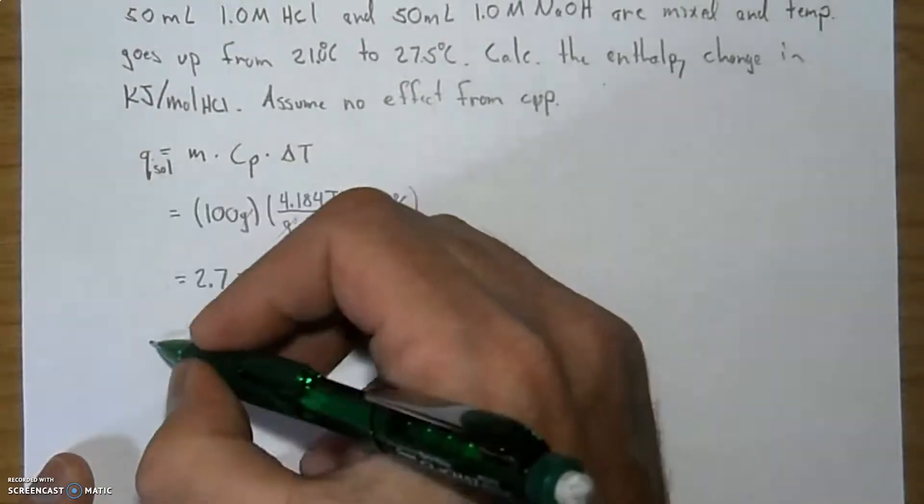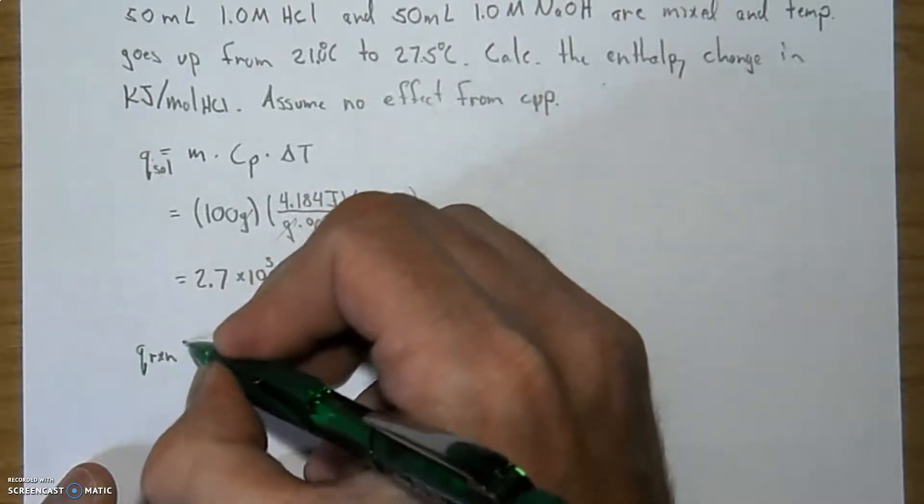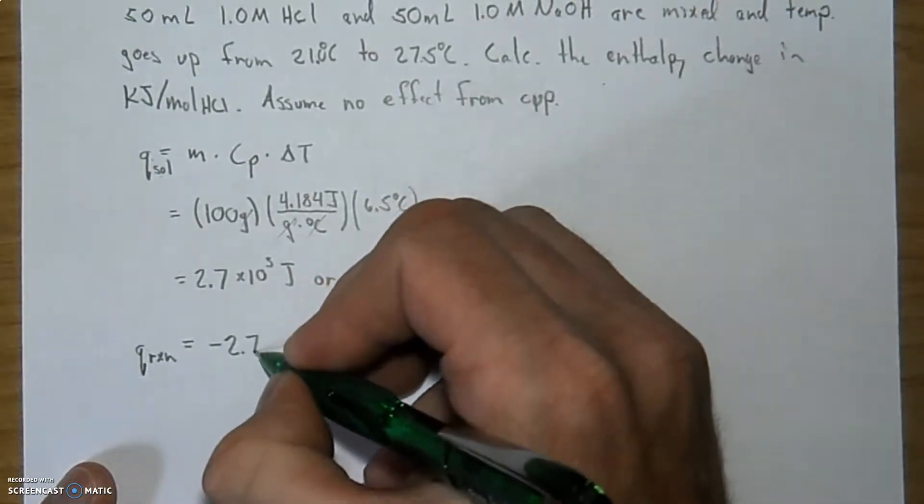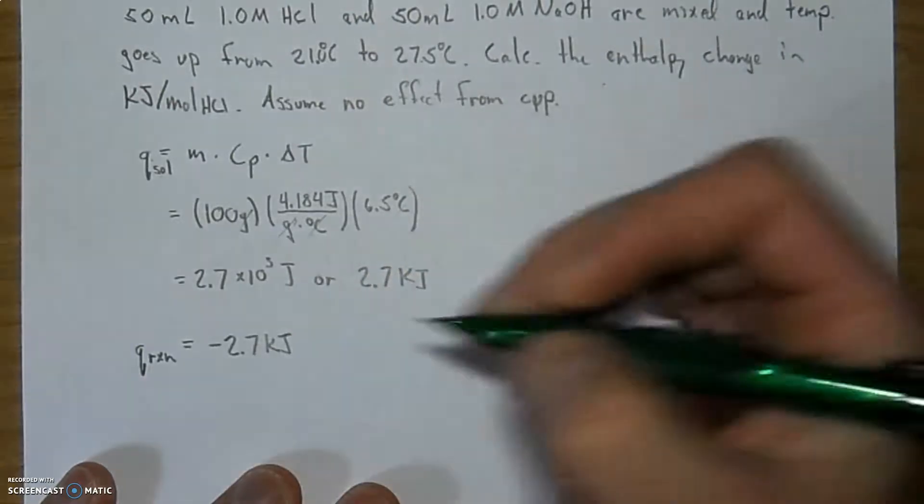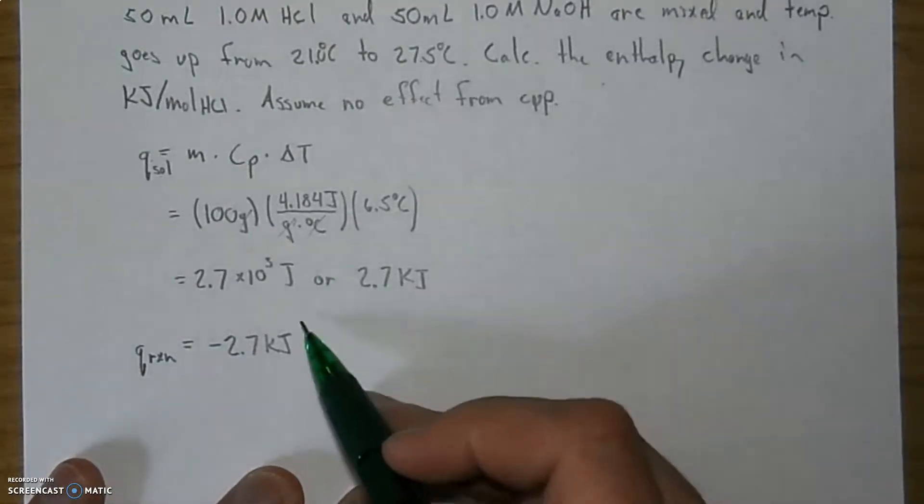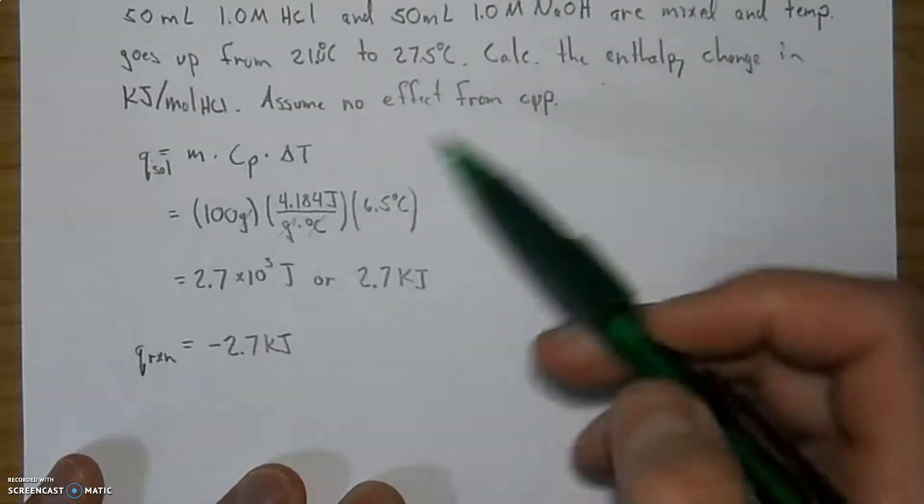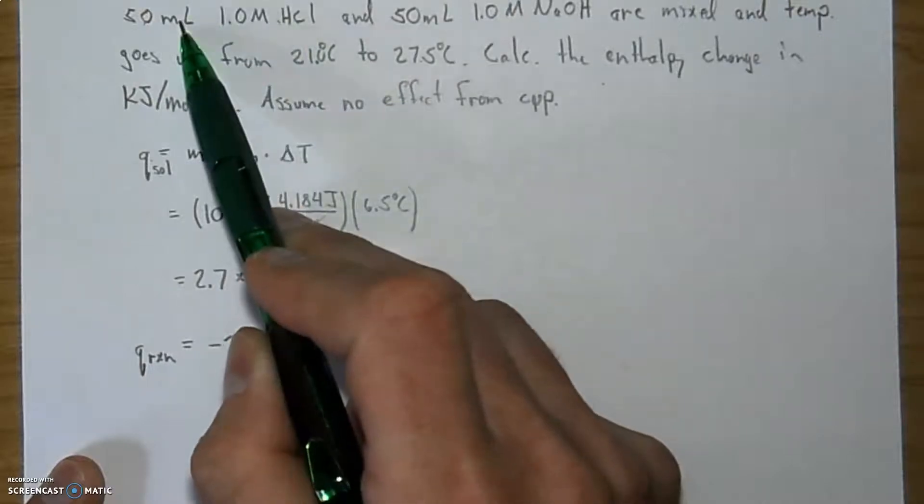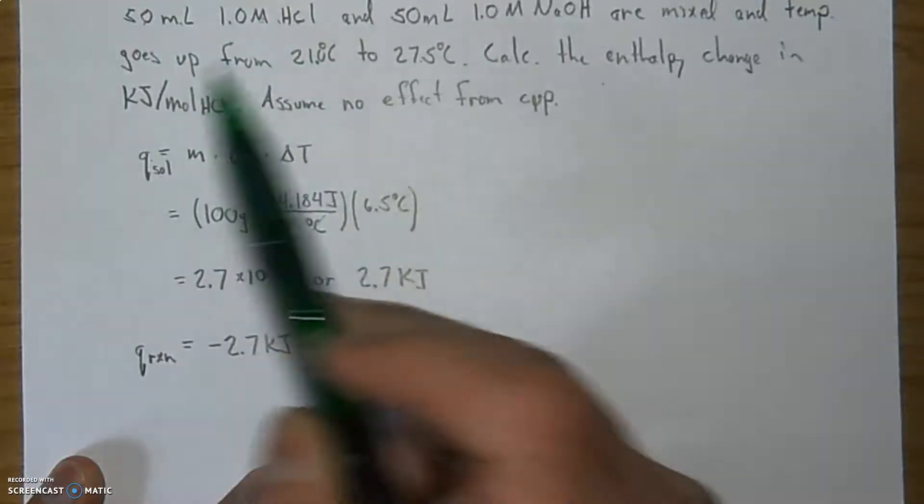So if this is what the water absorbed, the Q of the reaction is just the opposite. It released that same amount of energy. Kilojoules based on this reaction. Now, we didn't want the answer in kilojoules. We wanted the answer in kilojoules per mole of HCl. So we have to go back and say, I have 50 mils of HCl in this concentration. So volume, moles per liter, and that'll get me moles. So let's do that.